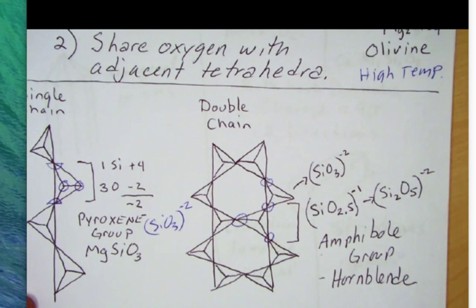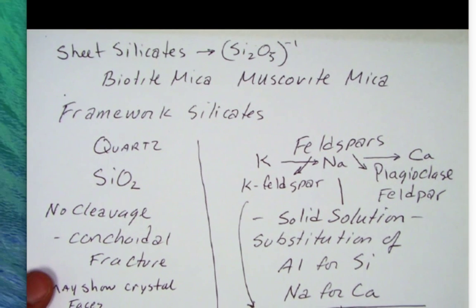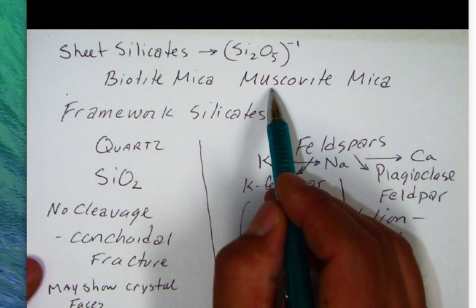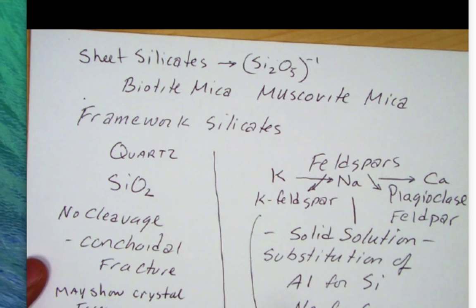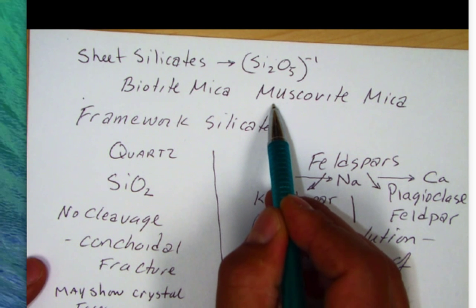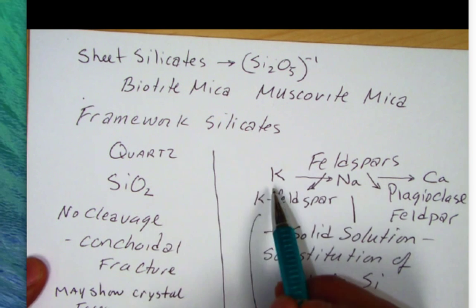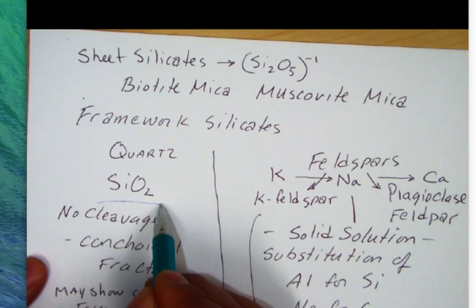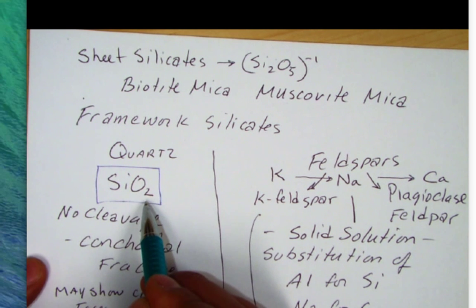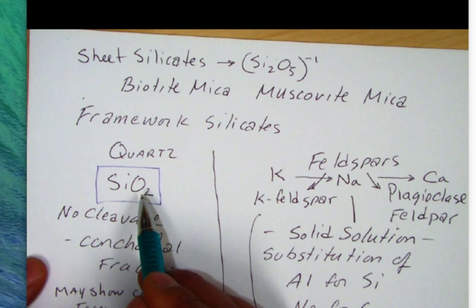Then we go to our sheet silicate group, which includes biotite mica and muscovite mica. Note that we're getting to the felsic minerals — muscovite mica is a felsic mineral — and we're sharing more and more oxygen. In this case every tetrahedra shares three oxygen. Then as we get to the framework silicate structure, that's quartz. Quartz and the feldspars belong in this group. Quartz shares all four oxygen, so it has a formula of SiO2, and it's neutral: two oxygen each at negative two makes negative four, balanced by the one plus-four silicon ion.